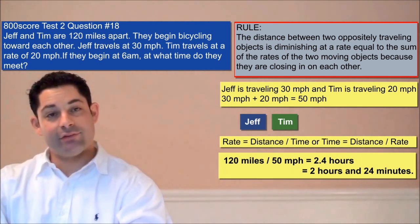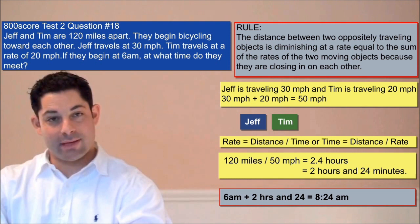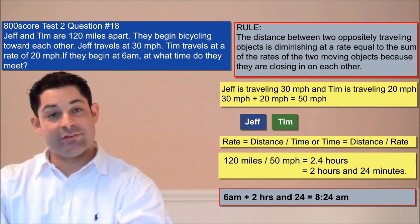So the answer to today's challenge question is 8:24 am. Since the bicyclists begin at 6 am, and since it takes them 2 hours and 24 minutes for them to meet, they meet at exactly 8:24 am.